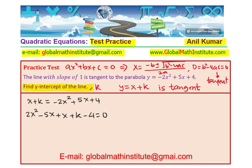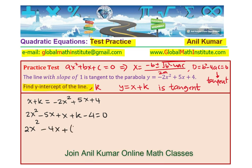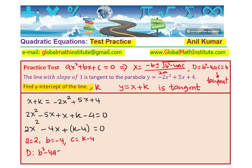Simplifying further and combining the x terms, we get 2x squared minus 4x plus (k minus 4) equals 0. So you can see that the value of a is 2, b is minus 4, and c is k minus 4. The discriminant, which is b squared minus 4ac, will be equated to 0.